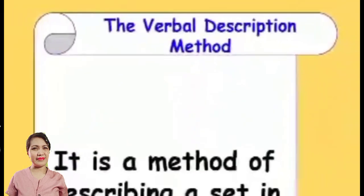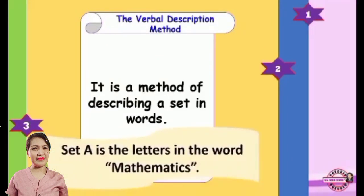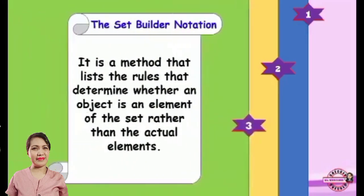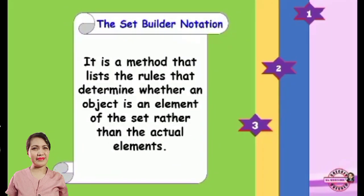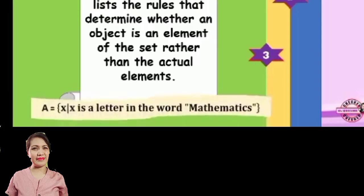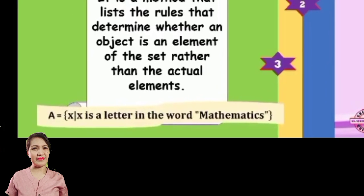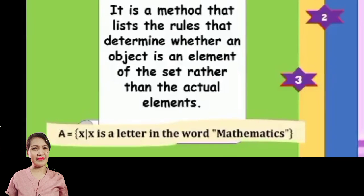The second way is the Verbal Description Method. From the word verbal, it is a method of describing a set in words. Example: Set A is the letters in the word Mathematics. Third is the Set Builder Notation. It is a method that lists the rules that determine whether an object is an element of the set, rather than the actual elements. Example: Set A equals the set of all X such that X is a letter in the word Mathematics.